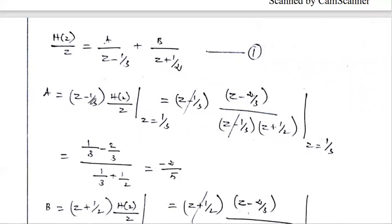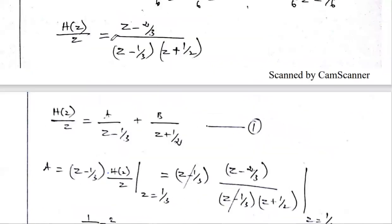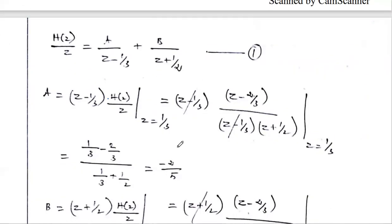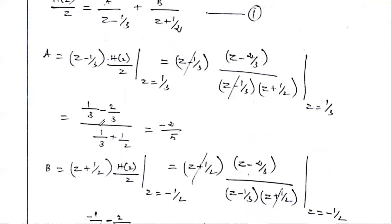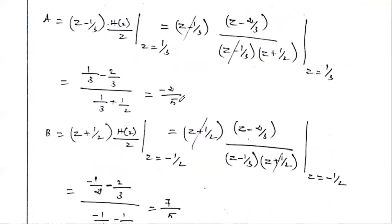A equals (z − 1/3) multiplied by H(z)/z, evaluated at z = 1/3. The (z − 1/3) factor cancels, and substituting z = 1/3 into the remaining expression, we get A = −2/5.